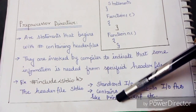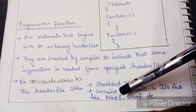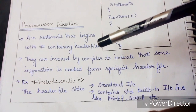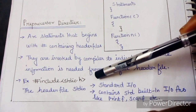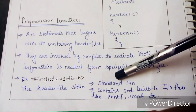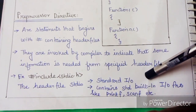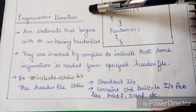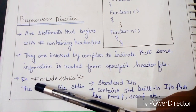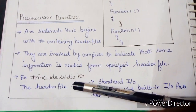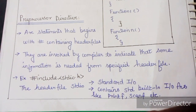For example, for printf and scanf functions in a program, the compiler will invoke the header file to get the required information. It will include the header file — for example, stdio.h — which contains standard built-in input and output functions.